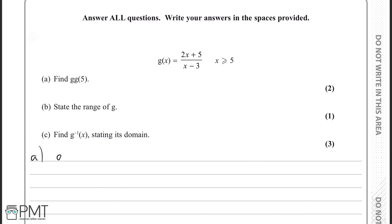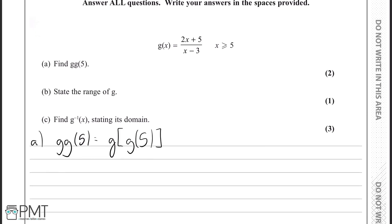Now, an easier way to write g of g of 5 is if I write in this notation here, g square brackets g of 5. And now what we can see is that what we're really doing is that we're finding out what g of 5 is by plugging 5 into this function, using that answer and plugging it back into g, and that will give us g of g of 5.